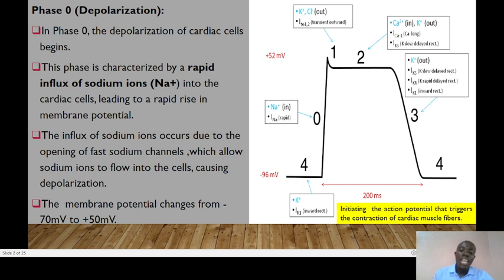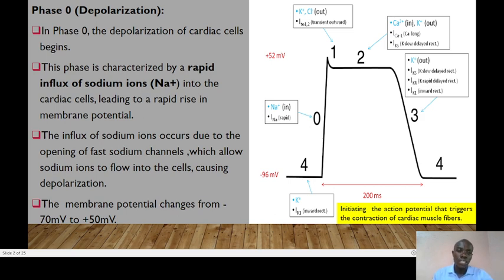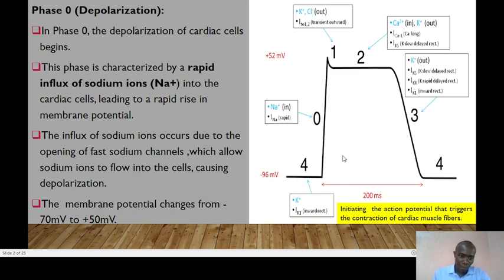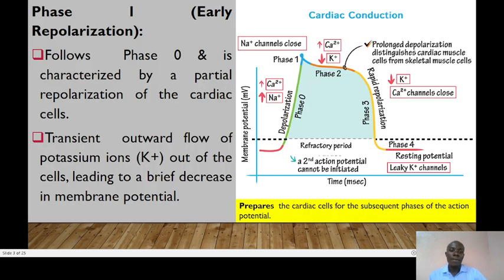The influx of sodium ions leads to a change in the membrane potential — from around negative 70 millivolts to around positive 50 millivolts. Phase 0 initiates the action potential that triggers contraction of cardiac muscle fibers. The fast sodium channels open, and sodium rushes into the cardiac cells, leading to the rise in membrane potential.